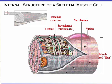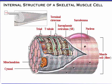T-tubules are invaginations of the sarcolemma projecting deep into the muscle cell's interior. Note the visible T-tubule openings on the surface of the sarcolemma. A triad is a three-unit group consisting of one T-tubule lying between two adjacent terminal cisternae. The cytosol is the intracellular fluid in which the organelles are suspended. Mitochondria are cytoplasmic organelles that are sites of ATP synthesis, referred to as the powerhouses of the cell.